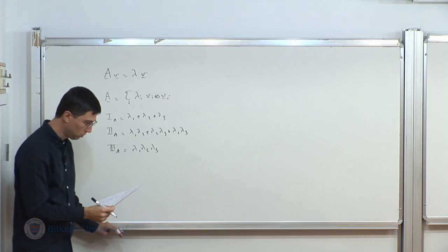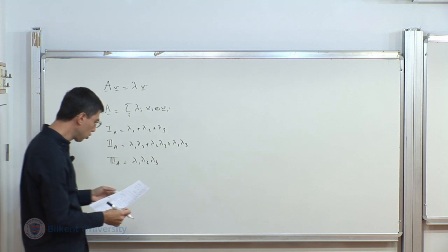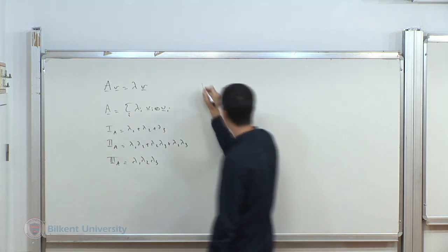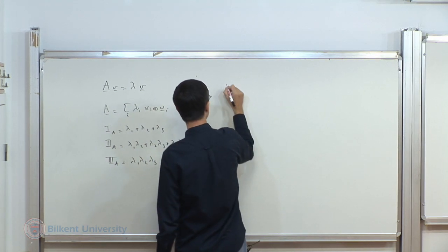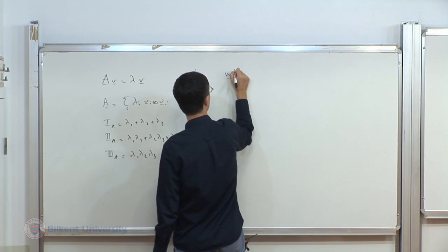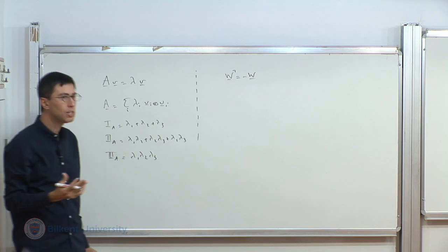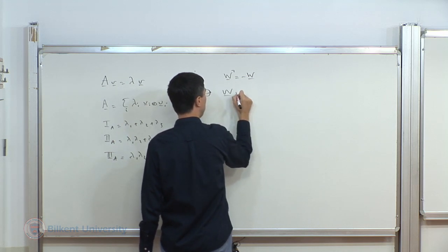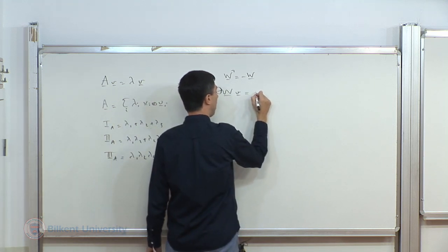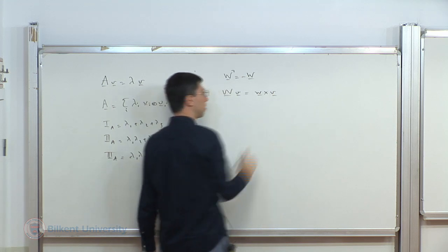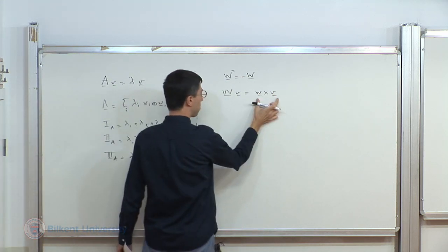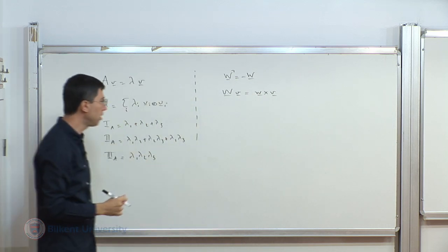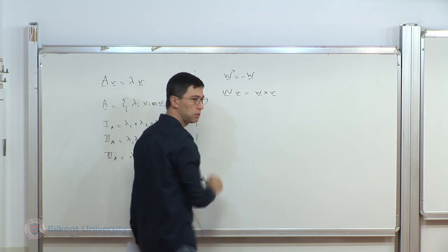Everything looks simpler for a symmetric tensor. For skew-symmetric tensors, we discussed a particular quantity called the axial vector. If we have a skew-symmetric tensor such that its transpose equals minus itself, it has three independent components like a vector. We define a vector w such that when this tensor operates on some arbitrary vector v, the outcome equals w cross v. This implicitly defines the axial vector w of the skew-symmetric tensor.